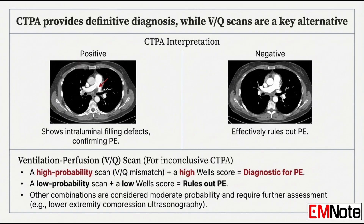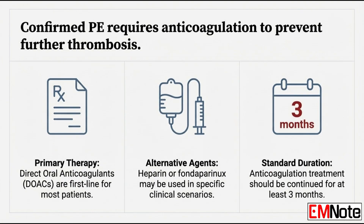What if the CTPA comes back inconclusive — maybe poor image quality? The backup is a ventilation-perfusion scan, a VQ scan. The logic is simple: if ventilation is normal but perfusion is poor, that mismatch strongly suggests a PE. If you have a high-probability VQ scan in a patient who already had a moderate or high Wells score, that's considered diagnostic. If the VQ scan is also inconclusive, you look for the source — a lower extremity compression ultrasound with Doppler. If you find a DVT in a patient with pulmonary symptoms, you make a presumptive diagnosis of PE and treat.